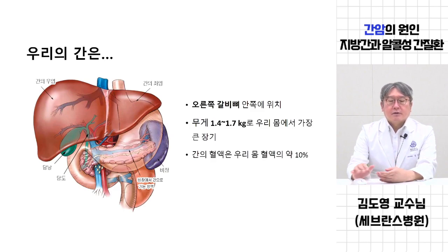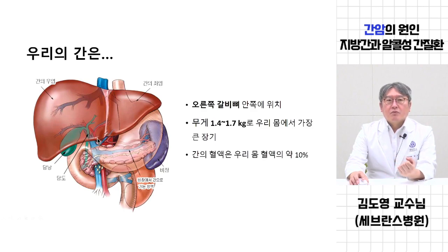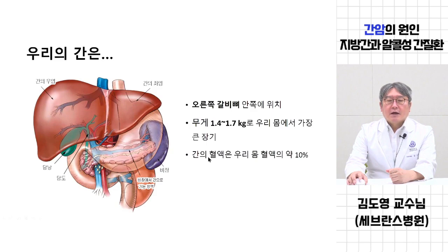간은 영양장기이다. 문맥이 간으로 혈액 공급의 한 70%를 담당하고, 간동맥은 대동맥에서 바로 갈라져서 간으로 가는데 산소 공급을 담당하며 한 30% 정도의 혈액 공급을 담당한다. 간이 유일하게 우리 장기 중에서 두 개의 혈관 공급을 받는다. 쓸개, 담관, 문맥, 간동맥, 우협, 좌협 이런 기본적인 해부학적인 구조를 가지고 있습니다.